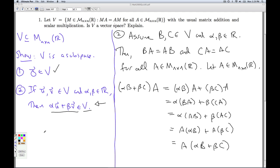So what have I shown? I've shown that alpha B plus beta C times A is the same as alpha B plus beta C. What's that tell me? The matrix alpha B plus beta C is also in V. It commutes with all the other matrices as well. That's our second condition.